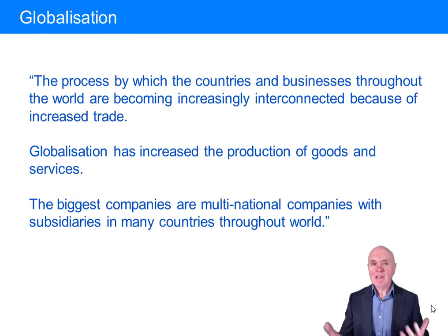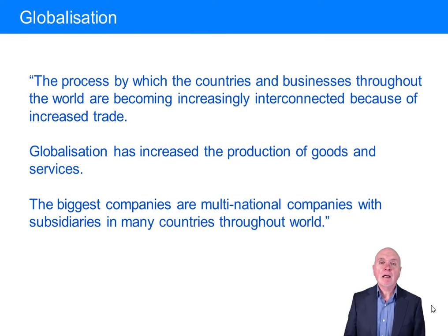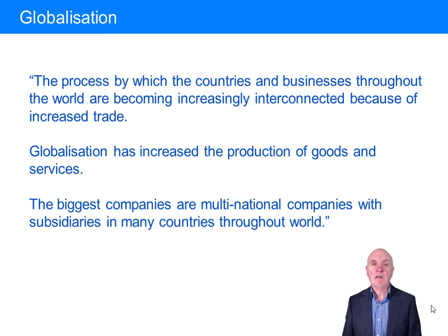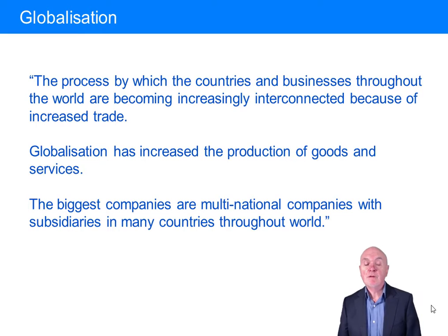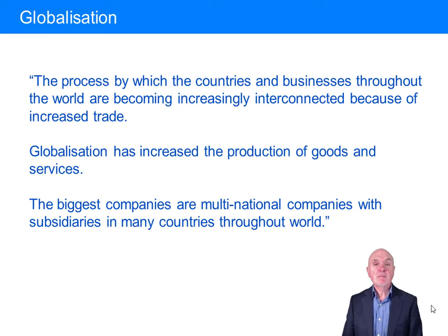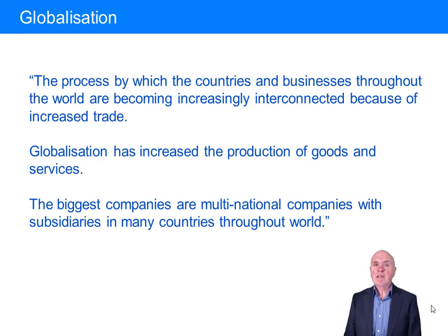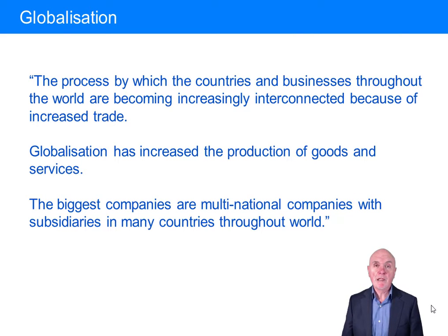We said this in the last chapter — many more imports, exports, many more companies deciding to perhaps manufacture close to their markets, or where labour costs are low. Globalisation has increased very much the production of goods and services. The goods and services are perhaps made more cheaply, perhaps better, perhaps made locally to the markets and therefore more readily available. Many of the biggest companies in the world are multinational companies with subsidiaries all over the place, very much making use of the idea of globalisation.